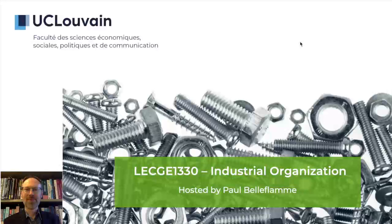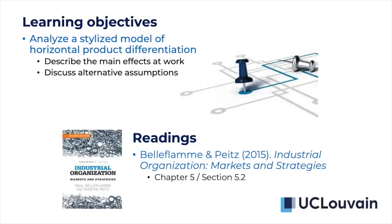Hi there, I'm Paul Belflem and this is Industrial Organization. This presentation is about the Hotelling model. This is a stylized model of horizontal product differentiation. We want to describe the main effects which are at work and we also want to discuss alternative assumptions. If you want to read more you can go to section 5.2 of the textbook.